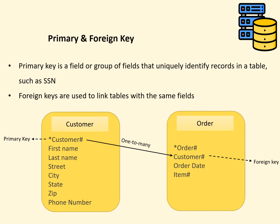Primary and foreign keys are used to create logical relationships among various entities within a relational database. A primary key is a field or group of fields that uniquely identifies a given record in a table. For example, SSN is used by the federal government to identify employees and their records. In organizations, a unique employee ID is defined to identify all data associated with their employees. The primary key helps users retrieve their intended record from a large data table.